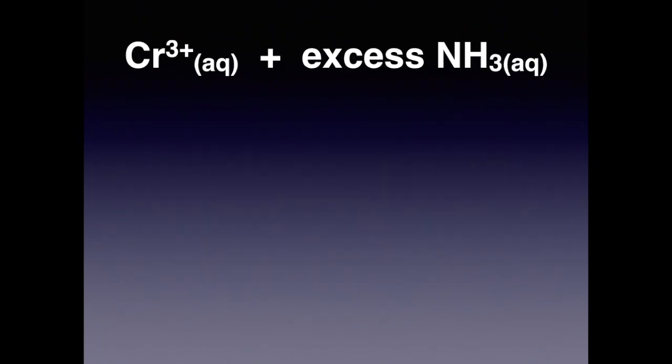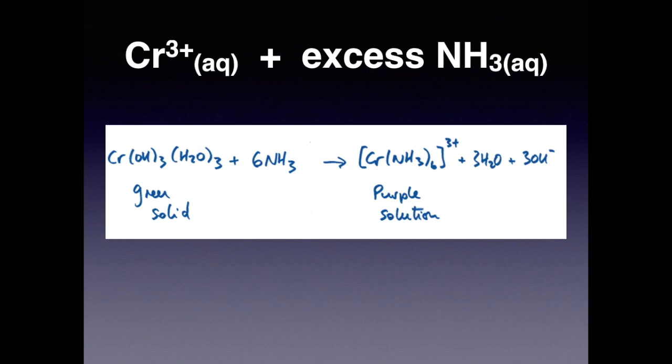And finally, if we add excess ammonia, we get this ligand substitution reaction where all of these ligands here are substituted by six ammonia ligands. We go from a green solid to a purple solution.